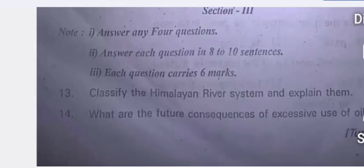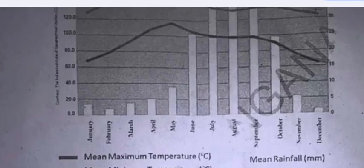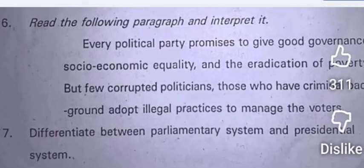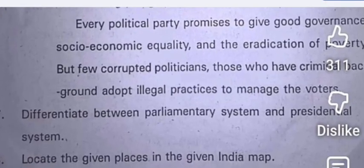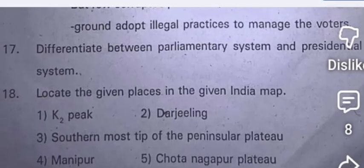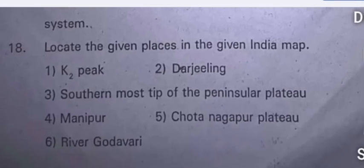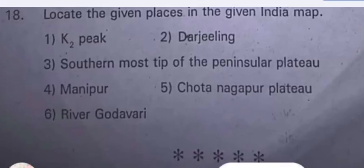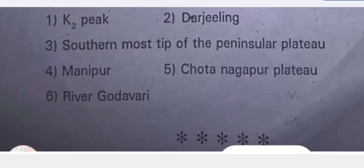Prepare a pamphlet to eradicate gender discrimination by creating awareness among the people. Section 3 — six marks questions requiring eight to ten sentences. Classify the Himalayan river system and explain it. What are the future consequences of excessive use of oil? Observe the following bar graph and analyze it — take a screenshot if needed and write your analysis. Read the paragraph about political parties and governance. Differentiate between the parliamentary system and the presidential system. Locate places on the India map: K2, Darjeeling, the southernmost tip of the Peninsular Plateau, Manipur, the Chota Nagpur Plateau, and River Godavari.